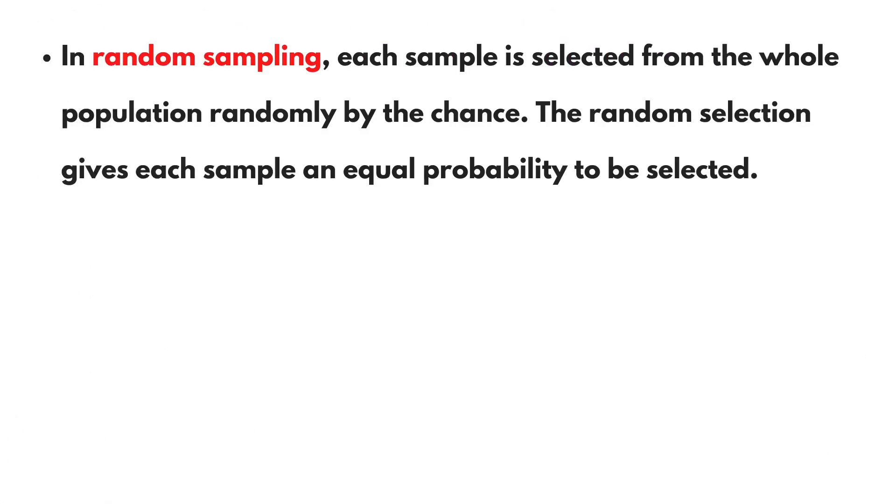In random sampling, each sample is selected from the whole population randomly by chance. The random selection gives each sample an equal probability to be selected.